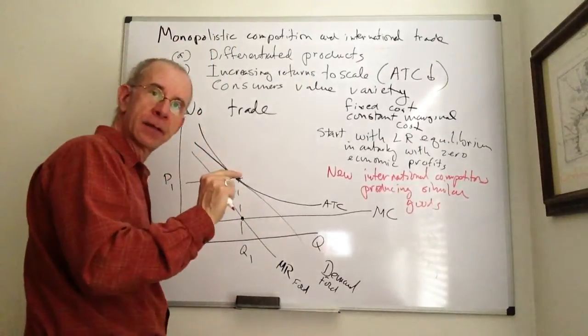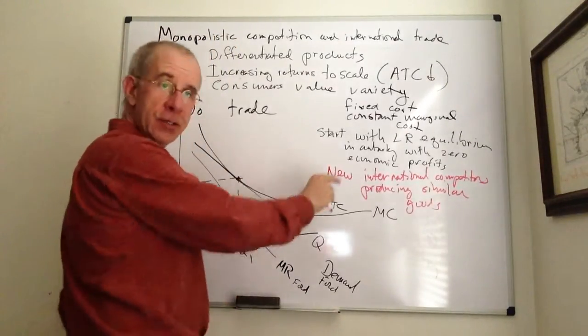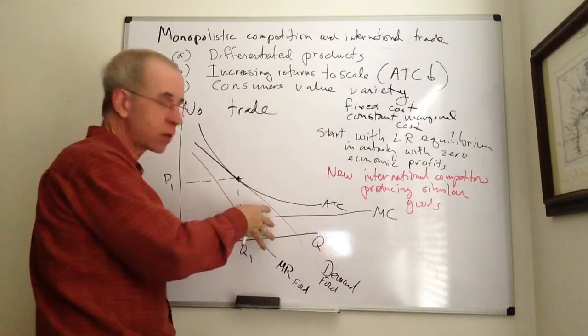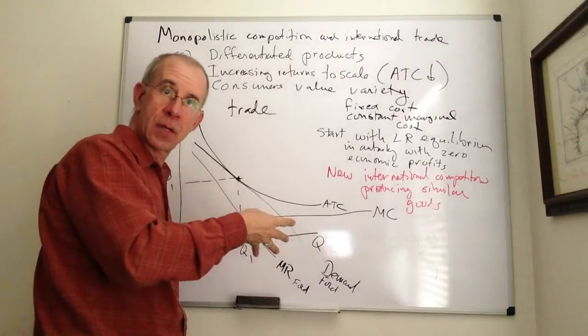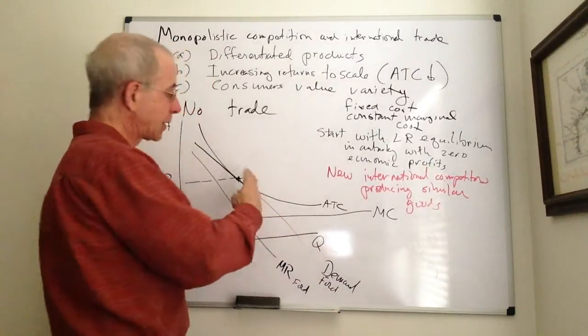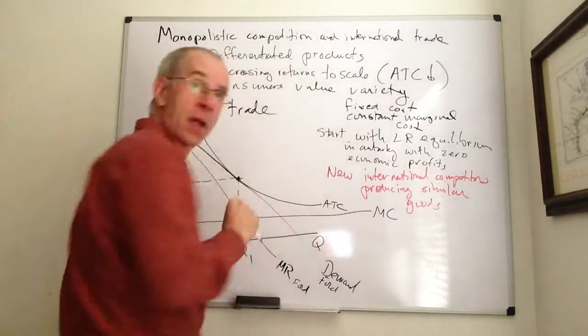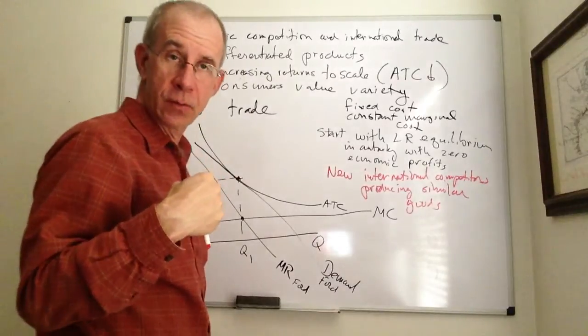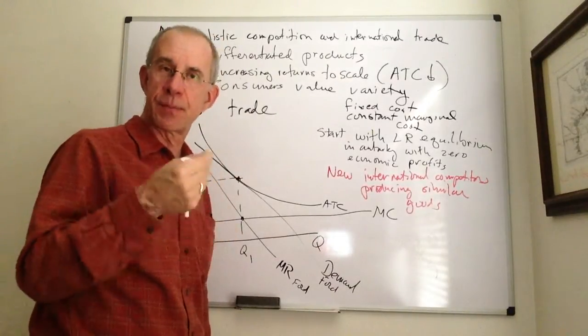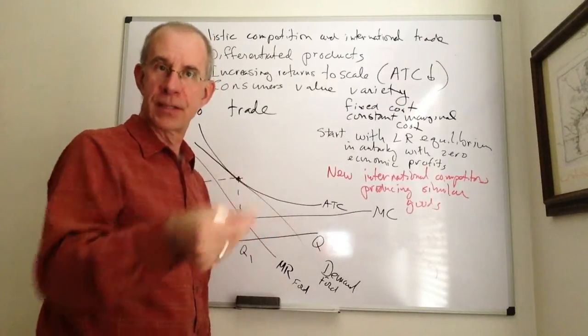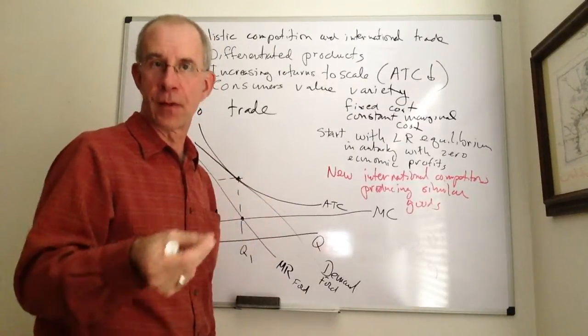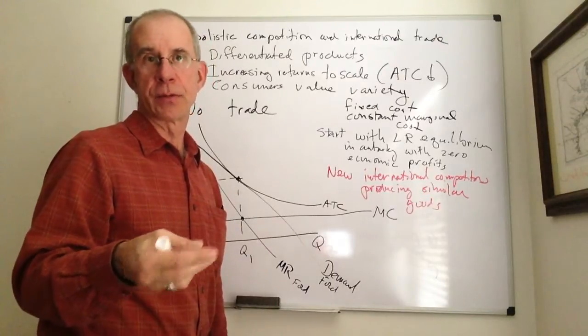Now, the upshot of competition of this type is that it's going to tend to cause the demand curve for Ford to become more elastic. It's going to become flatter. Domestic firms purchasing Ford are going to be more sensitive to price when you've got more competition, more varieties from other Japanese sources.